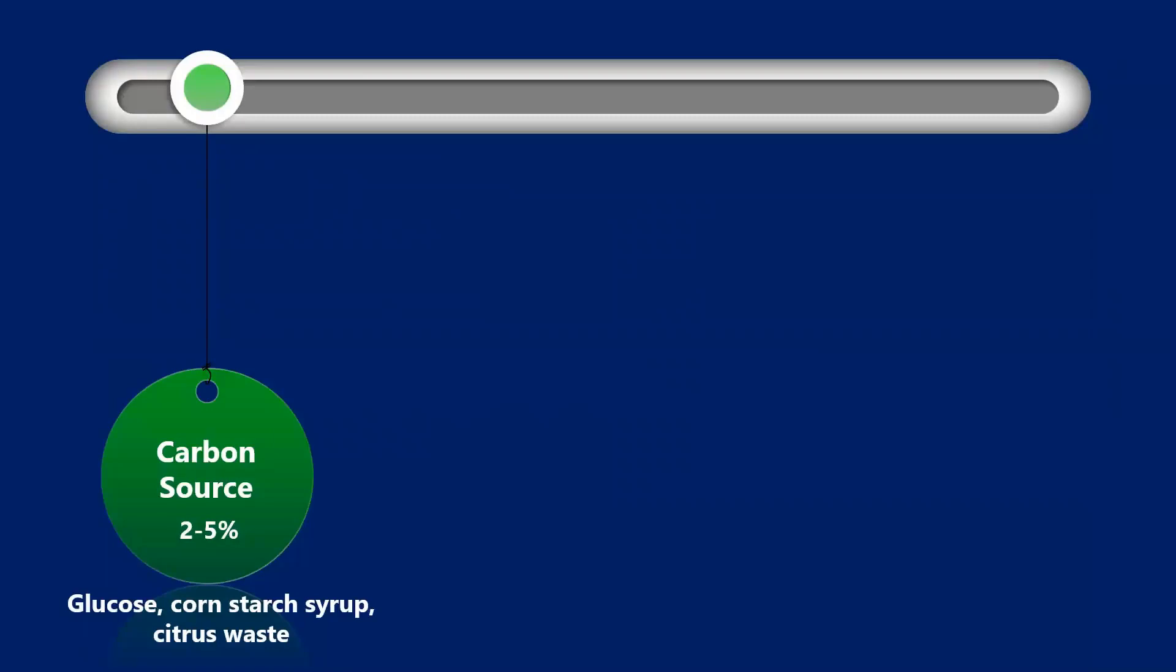The carbon source usually employed for the production of xanthan is glucose, corn starch syrup, or citrus waste. If you want industrially very pure grade of xanthan, then we go for glucose syrup, or else we can use any other raw materials that I have listed here. The optimum concentration is found to be 2 to 5 percent.